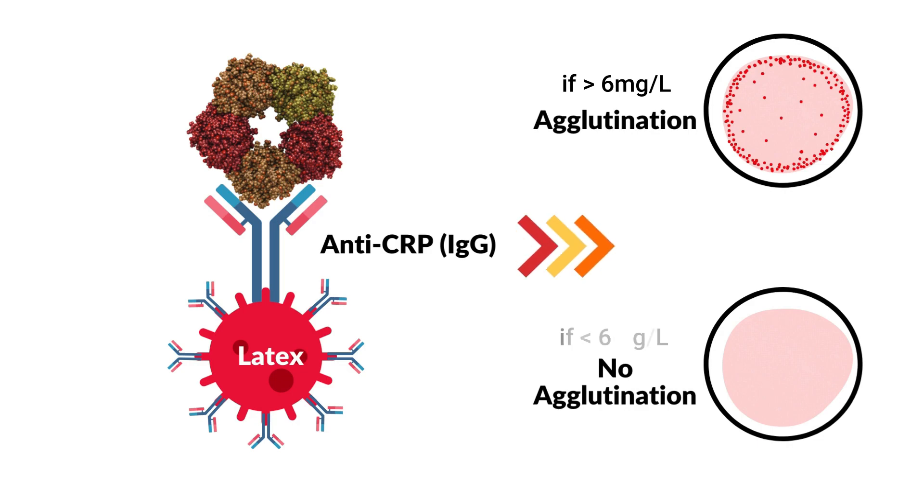If its concentration is less than 6 mg per liter, then no agglutination is observed. Here comes the procedure.